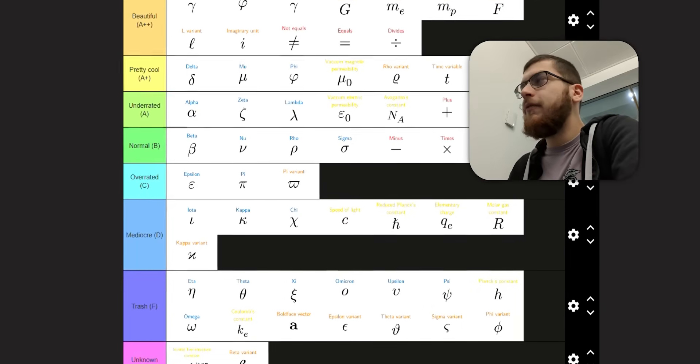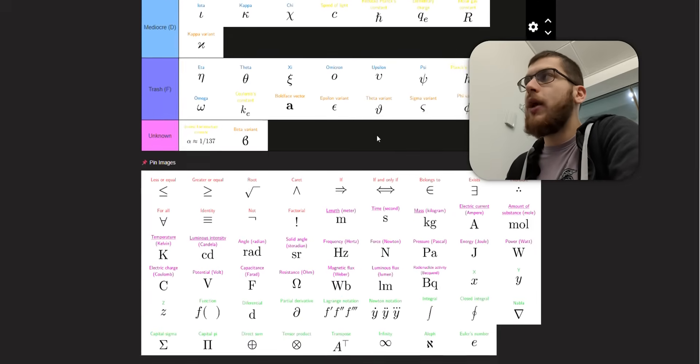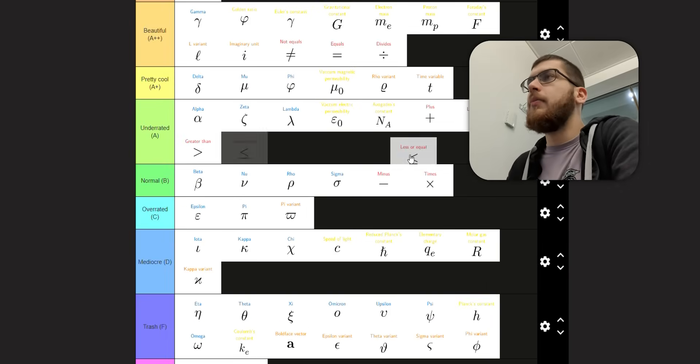Less than and greater than. These make perfect sense. Because you've got the smaller thing on the left-hand side. The bigger thing on the right-hand side. Of course, you're going to have wider on the bigger side. Narrow on the small side. It can get confusing. A lot of people get them the wrong way around. So I'm going to put them in overrated.